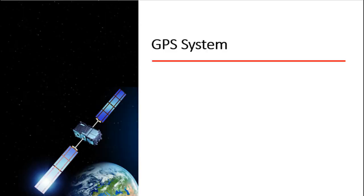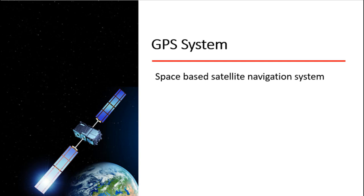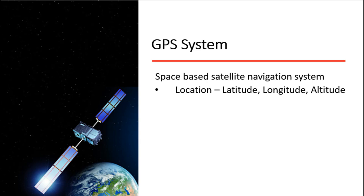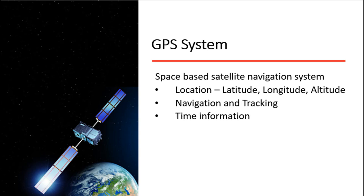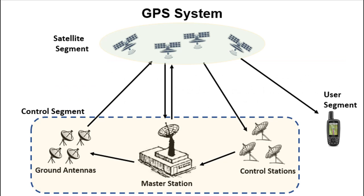First, what is a GPS system? GPS is a space-based satellite navigation system that was installed by the US Department of Defense and is currently maintained by the same department. The GPS system helps determine a three-dimensional position, meaning the latitude, longitude, and altitude. The initial requirement was set to get a position accuracy of less than 15 meters; however, the current GPS device provides a much better accuracy. GPS system also supports navigation and tracking. In addition, it provides a precise time anywhere on Earth and in all atmospheric conditions.